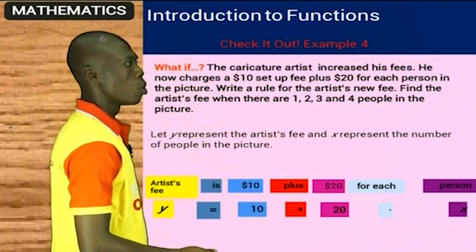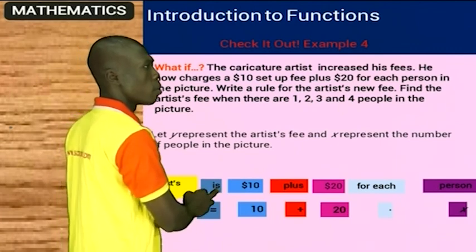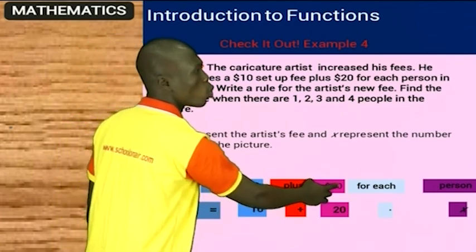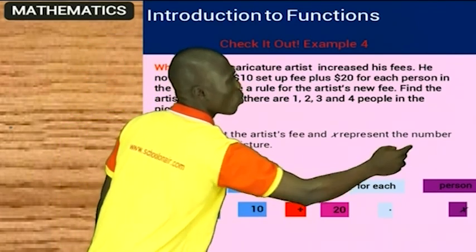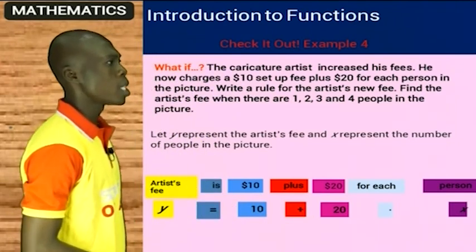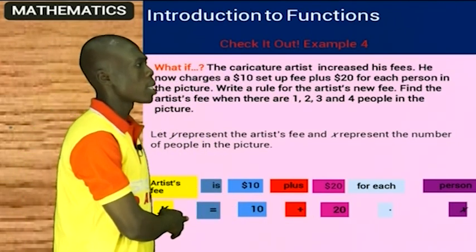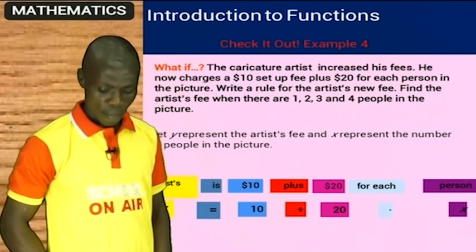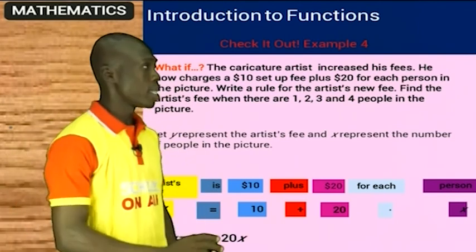So you have the artist fee, which is $10 plus $20 times whatever number of people we have in the picture. We are able to generate that Y equals $10 plus $20X.